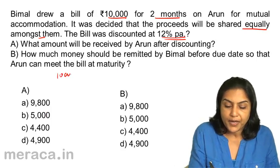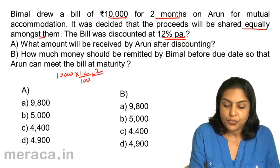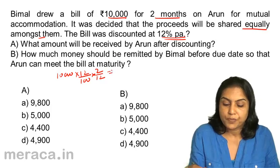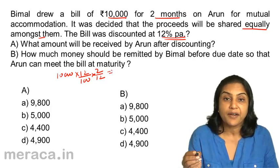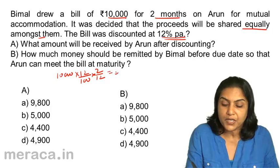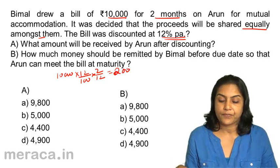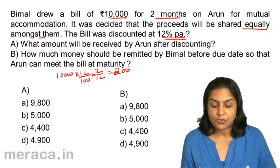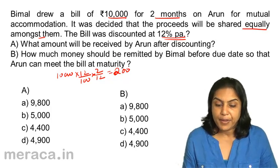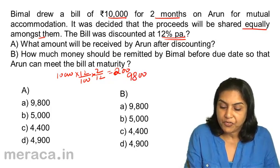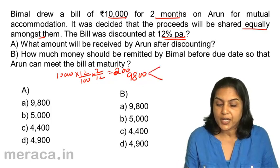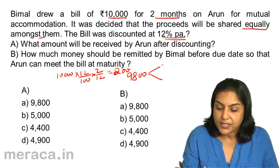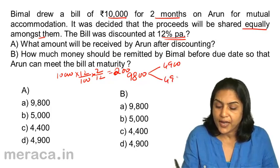The amount received would be 10,000 at 12% for two months. This works out to 1% every month, so Rs.100 every month, meaning Rs.200 is the total discount. This means Bimal gets Rs.9,800 from the bank. If this is to be shared equally, each gets Rs.4,900.